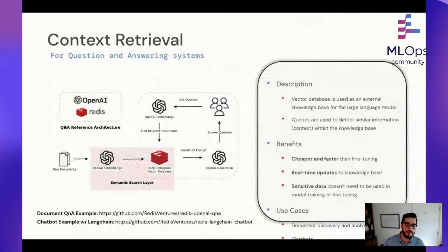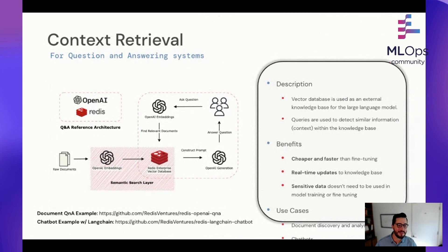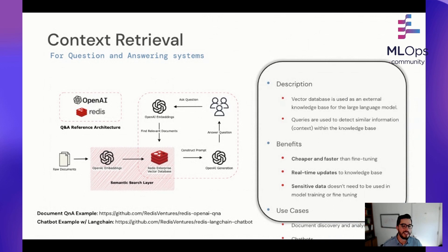Q&A systems are really huge right now for all types of use cases. You'll see an architecture here that you can find on GitHub — Redis Ventures is our GitHub, so there are a bunch of different examples to check out. The vector database is used as an external knowledge base. When you ask a question, that question gets turned into an embedding, and that embedding is used to search through the vector database for semantically similar context. That context is retrieved — the golden retriever analogy — for the next stage, which you can think of like a chain.